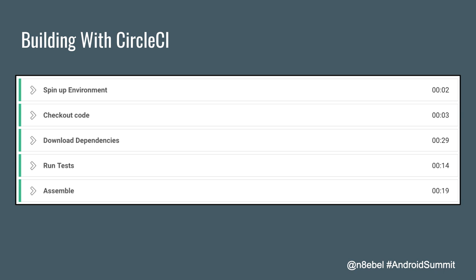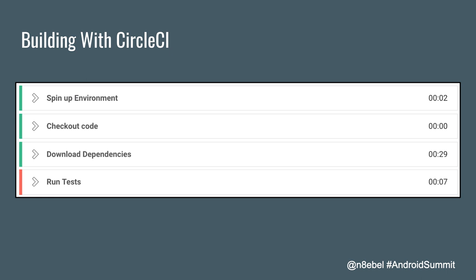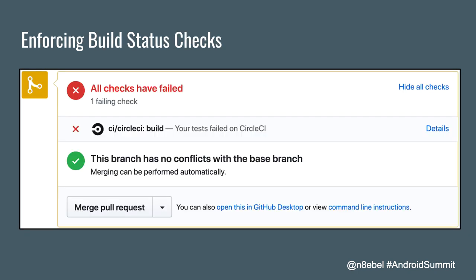Once you've done all of that, within the CircleCI dashboard you'll see logged output and a total time for each build step. In a perfect world when everything builds successfully, all steps will be highlighted green indicating success. When everything is successful, in your GitHub PRs you'll see a message saying all checks have passed and there are no conflicts. However, when something doesn't build successfully — for example if tests are not passing due to a compilation error or logic failure — the pull request will show a big red warning saying your tests have failed on CircleCI.